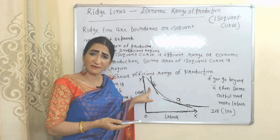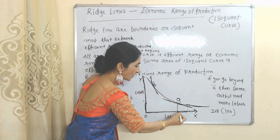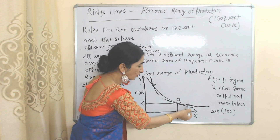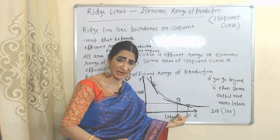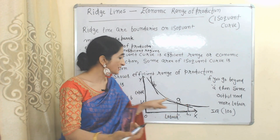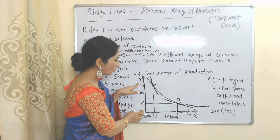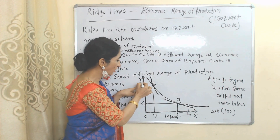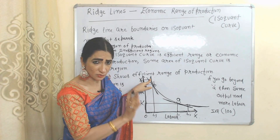If you go beyond point A or beyond point B, then we don't have any efficient region. If we do production at point A, we need OL labor and OK capital. But if you go beyond point A, for the same amount of output you need more labor — that's why the area beyond point A is not an efficient region. Similarly, at point B you need OL1 labor and OK capital, but if you go beyond point B, for the same output you need more capital — that's why the area beyond point B is not an efficient region.